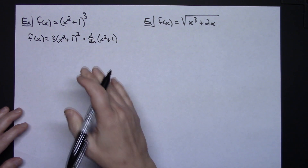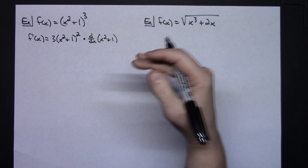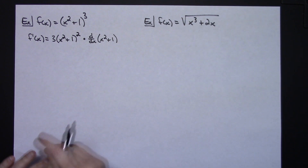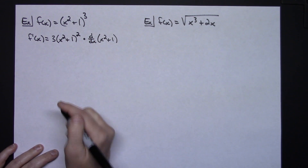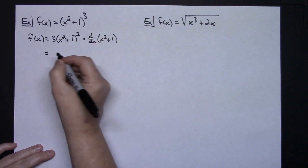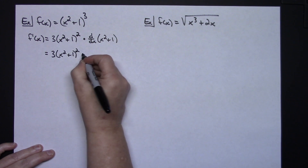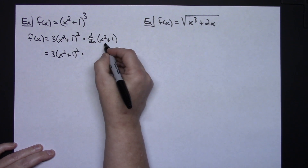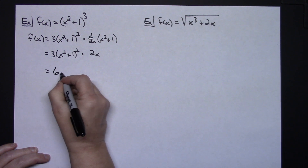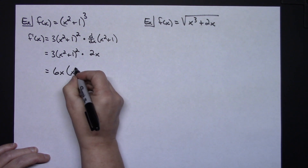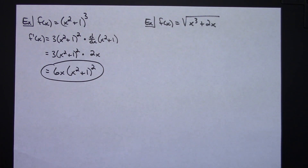When you first learn chain rule it's a good idea to show the d/dx notation, especially when you have more than two composite layers. The derivative of x squared plus 1 gives me 2x. Simplifying, I pull the 3 and 2 together to get 6x out front, giving a final answer of 6x times x squared plus 1 to the second power. Pretty straightforward implementation of the chain rule.